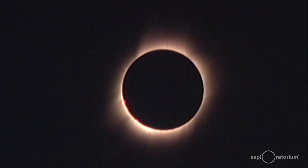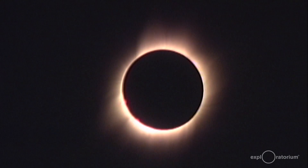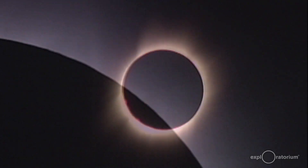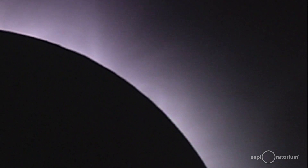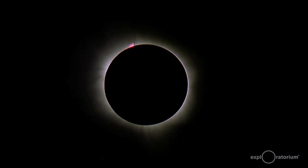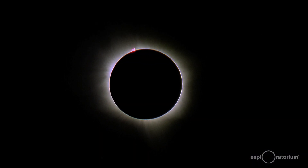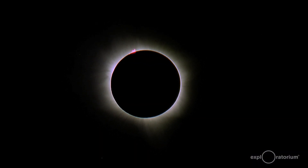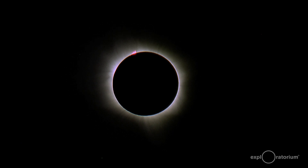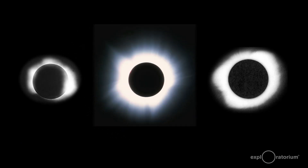During totality is when the full glory of a total solar eclipse can be observed, and that is called the corona. The corona is the outer atmosphere of the sun, but because of the brightness of the sun and the brightness of the sky, we cannot see it except during a total solar eclipse. From eclipse to eclipse, depending on where you are on the magnetic cycle of the sun, the corona can take on a different kind of configuration.